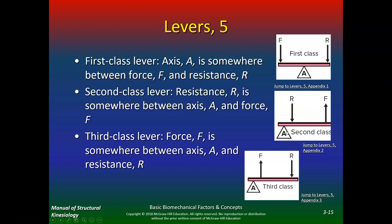Think about a wheelbarrow — here's the resistance: you put a whole bunch of rocks in, and it just takes minimum effort to hold it. The calves work this way. Think about how much effort you need to lift 200 or 300 pounds — not much, because the calves are very efficient. The first and second class levers are not very efficient overall, but the most efficient is the second class lever.